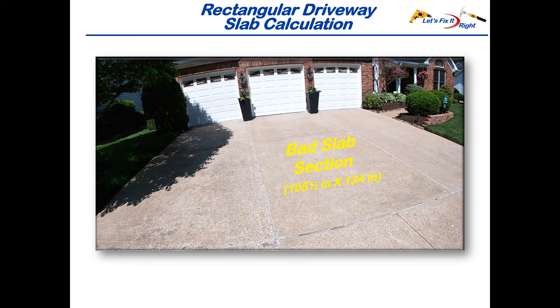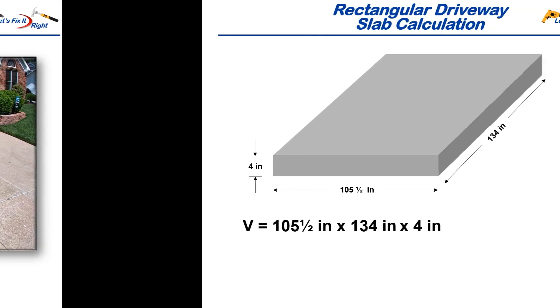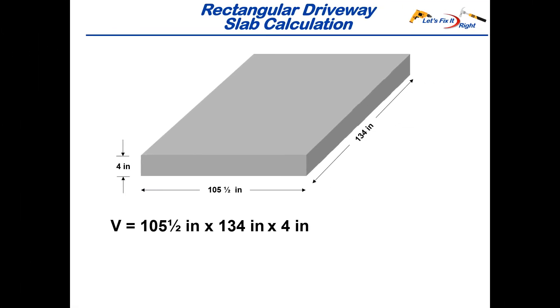For our first example, we'll calculate the concrete bags required to replace this bad section in my driveway, which covers a 105.5 by 134 inch area. Calculating the volume by multiplying the length, width, and height provides 56,548 cubic inches. Dividing this by 1728 cubic inches per cubic foot gives us 32.7 cubic feet.